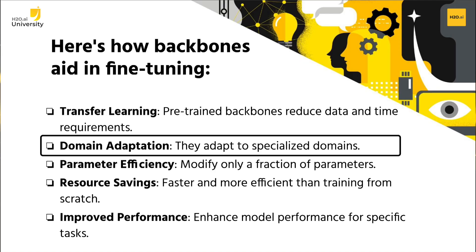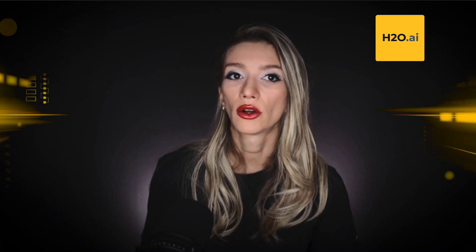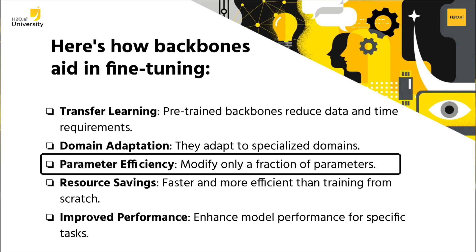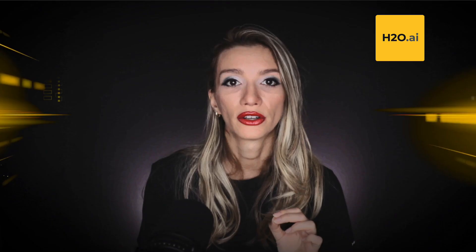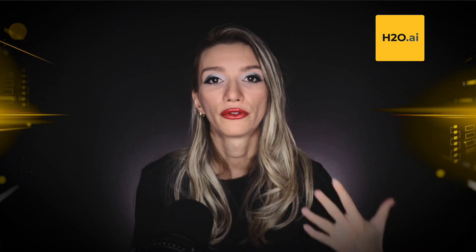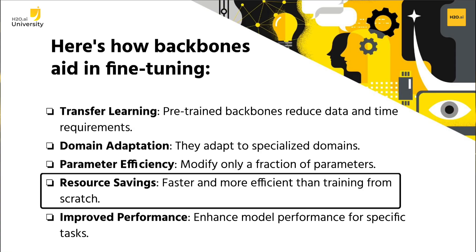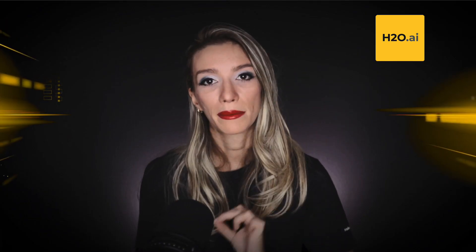Domain adaptation: for domain-specific tasks like medical or legal texts, backbones bridge the gap between a general language model and specialized domains, with fine-tuning on domain-specific data allowing effective adaptation. Parameter efficiency: backbones have numerous parameters and fine-tuning involves modifying only a fraction, making it more data-efficient and resource-friendly compared to training from scratch. Speed and resource savings: fine-tuning on a pre-trained backbone is faster and more resource-efficient than training a model from scratch, making it practical for many applications.